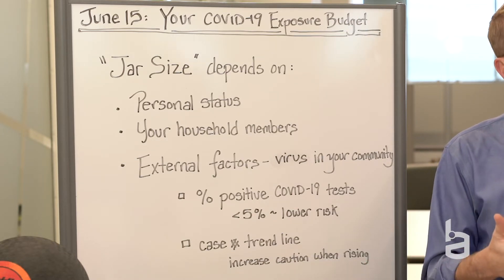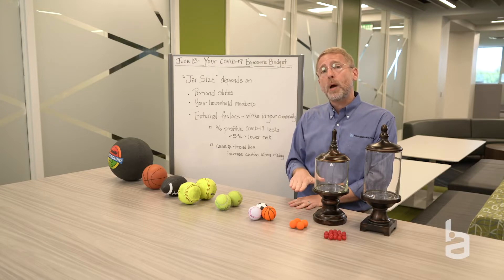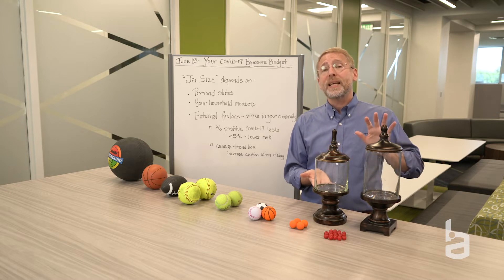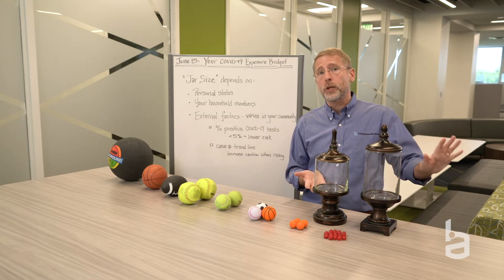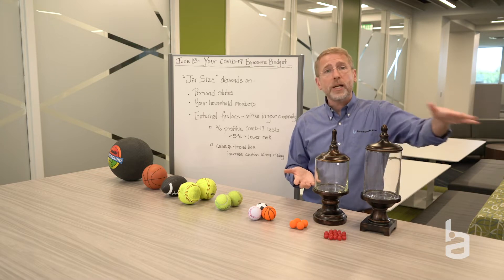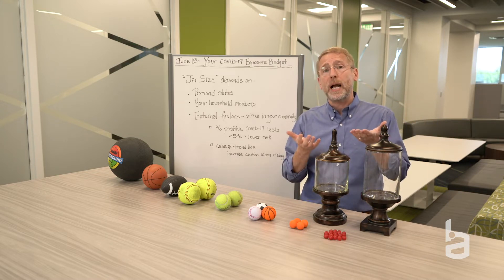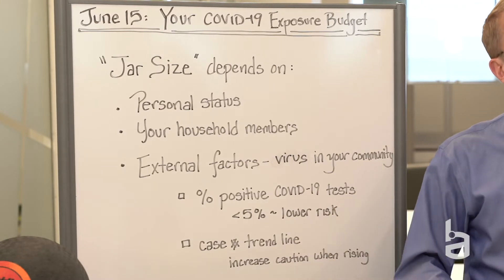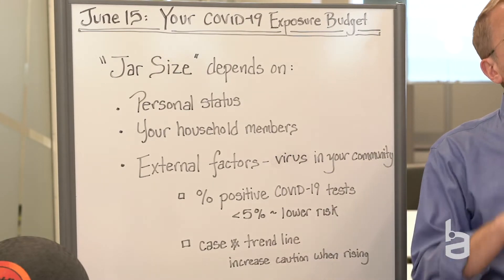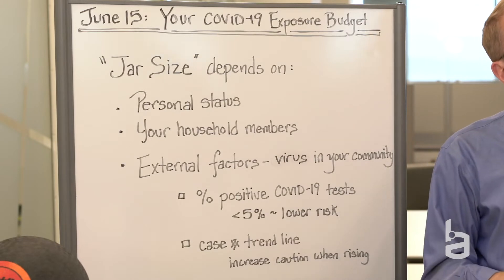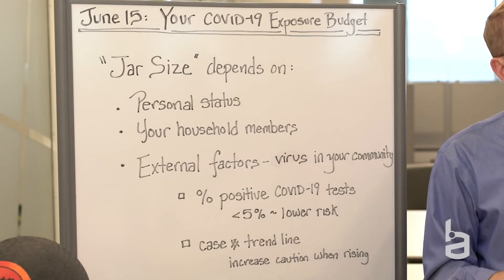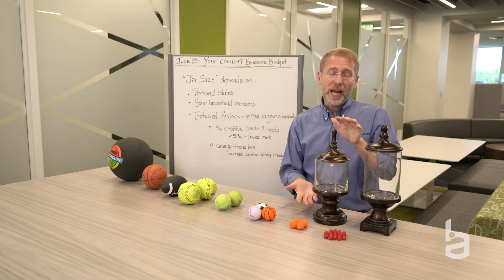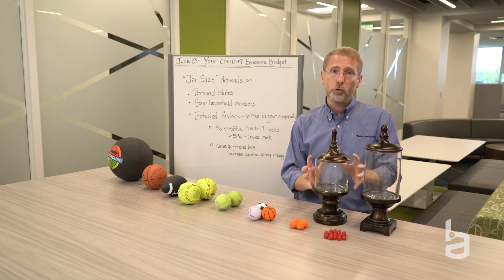When those positive percents climb, it means your exposure jar has gotten smaller because the external likelihood that you're going to cross paths with the virus in your everyday community interaction is already higher. You also want to pay attention to the trend line in terms of the number of new cases. When that's stable or dropping, the likelihood that you'll encounter it in your community is falling. But when new case numbers begin to increase, you need to increase your caution and think about a smaller exposure jar for yourself.